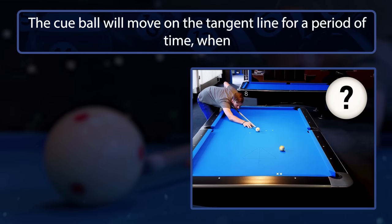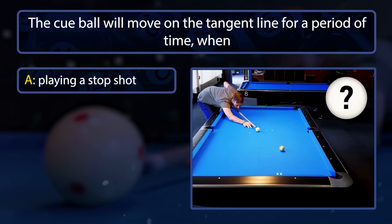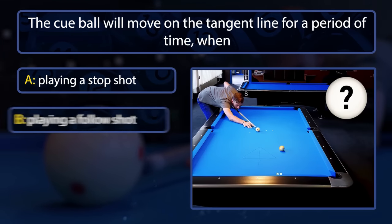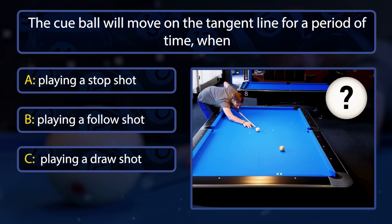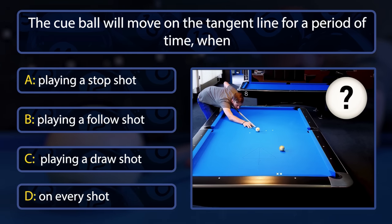The cue ball will move on the tangent line for a period of time when: you're playing a stop shot, you're playing a follow shot, you're playing a draw shot, or on every shot?